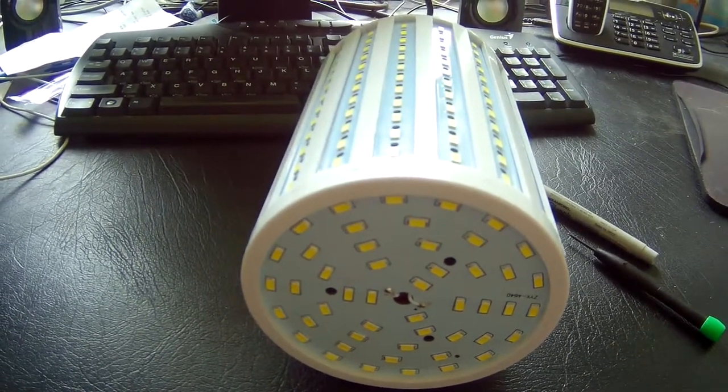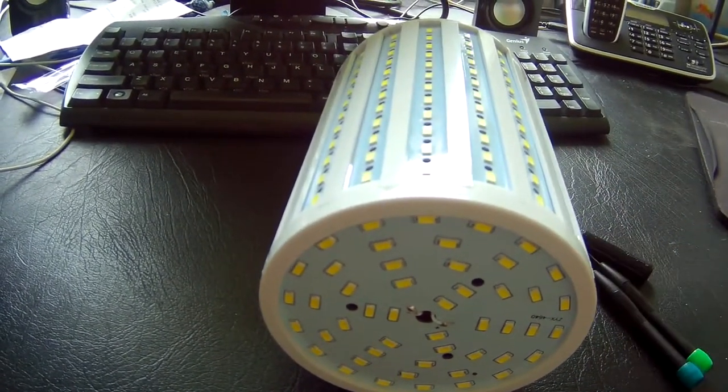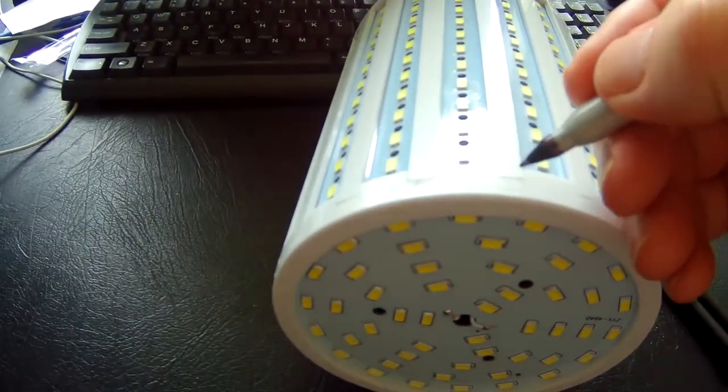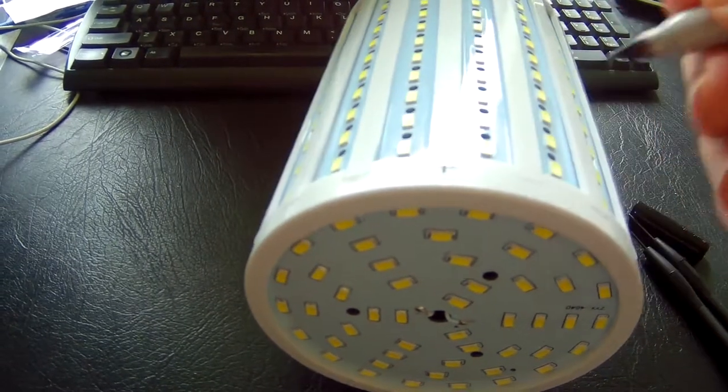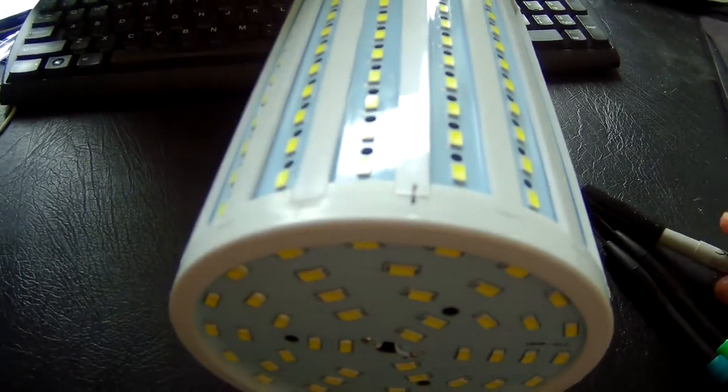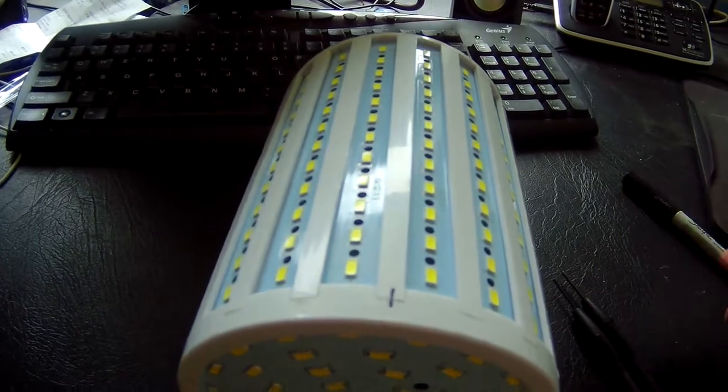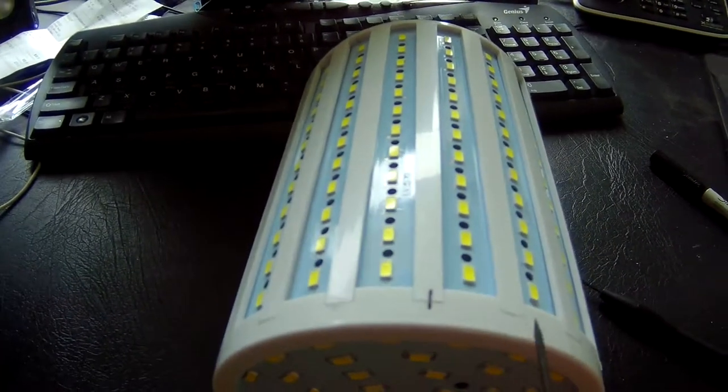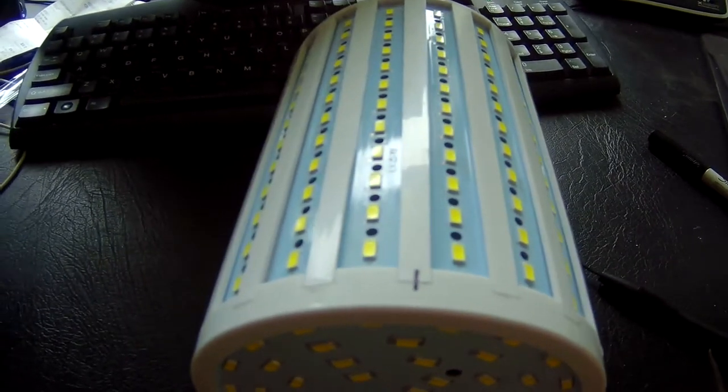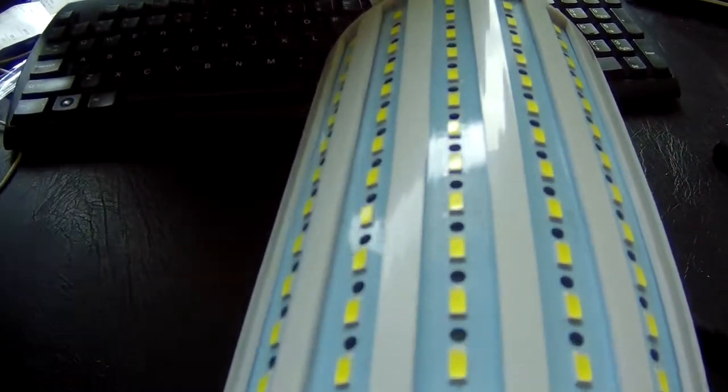Basically you need to, before you start pulling this thing apart, just put a little pen felt pen mark on one of those pillars just like I've done there. Because as you pull it apart it just doesn't come away nicely and there are little plastic pins in each of these and some of them will break. So to get it back in exactly the same position you need to have a key and that's the key.